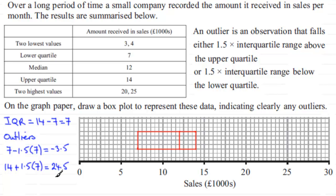Looking at the upper outlier boundary of 24.5, the only value above that is 25, so we mark that as an outlier. The value 20 is below 24.5, so 20 becomes the highest value before any outliers. We mark that with a bar and join from the upper quartile out to that bar.